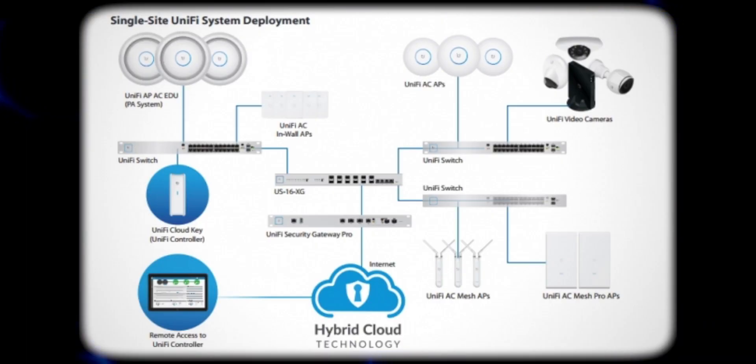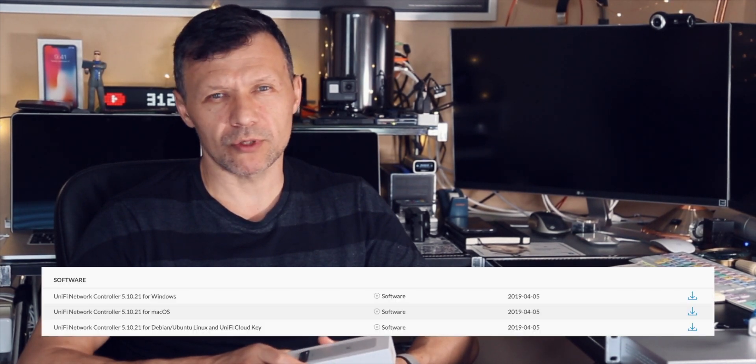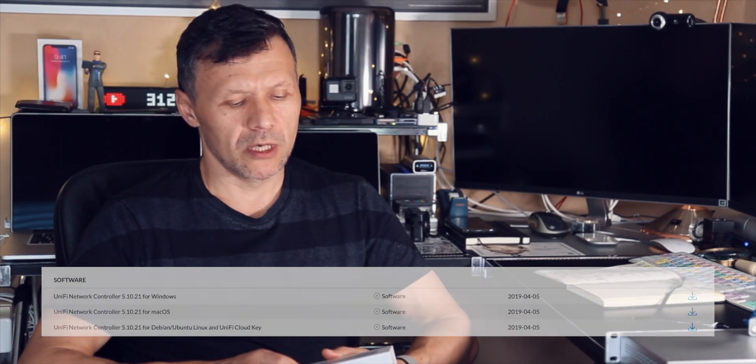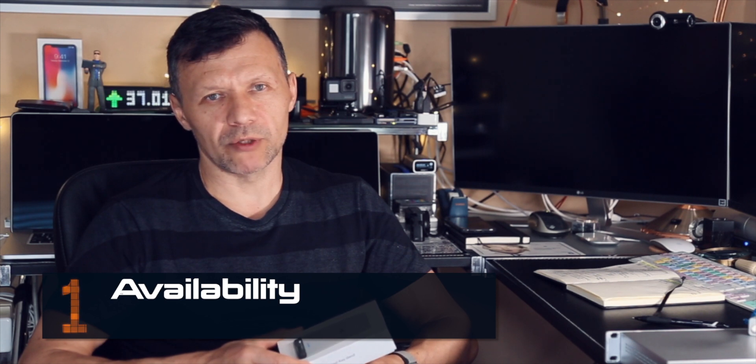Today we're going to talk about UniFi CloudKey. Why would you need a CloudKey in your UniFi setup? The UniFi setup is driven by the UniFi controller — you cannot really set up an access point without it. There are two options: you can run the controller on a dedicated machine running Windows, Mac OS, or Linux, or you can have it on the CloudKey. The key reason is you want your UniFi controller to be available all the time, which means either running your computer 24/7 or having dedicated hardware.